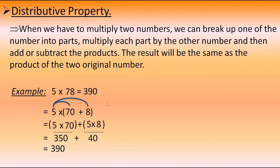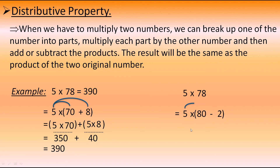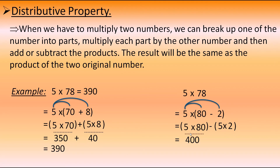Now let's check using subtraction. Splitting 78 as 80 minus 2: 5 into 78 equals 5 into (80 minus 2). According to the distributive property, multiply 5 with 80 and 5 with 2, then subtract. 5 into 80 equals 400, and 5 into 2 equals 10. So 400 minus 10 equals 390, which is equal to the original answer. This is the use of the distributive property when multiplying with a larger or more complicated number.